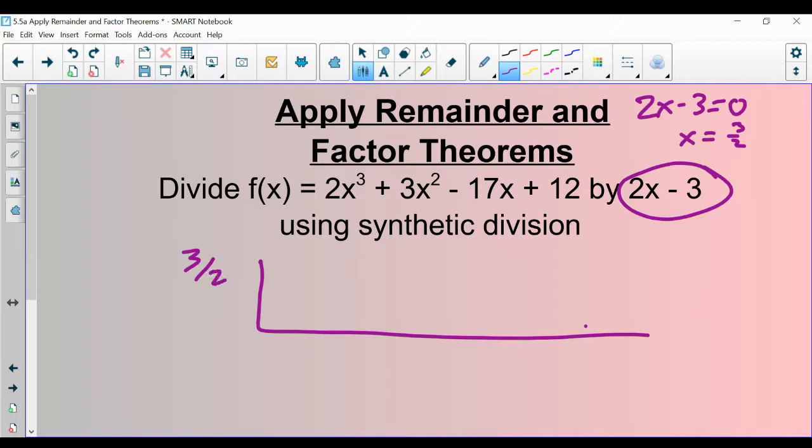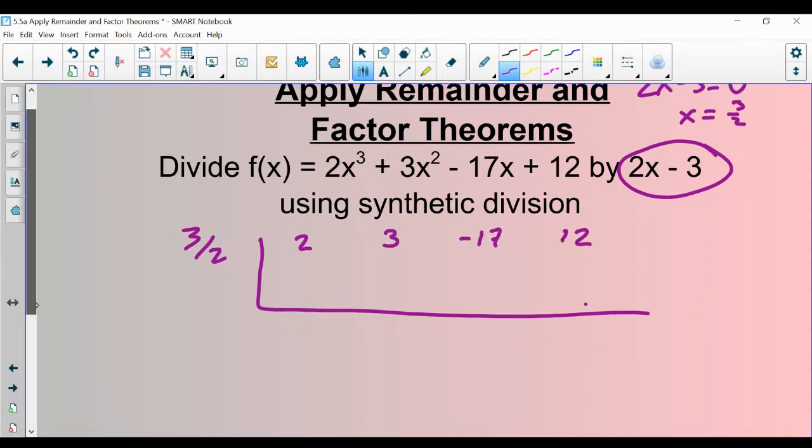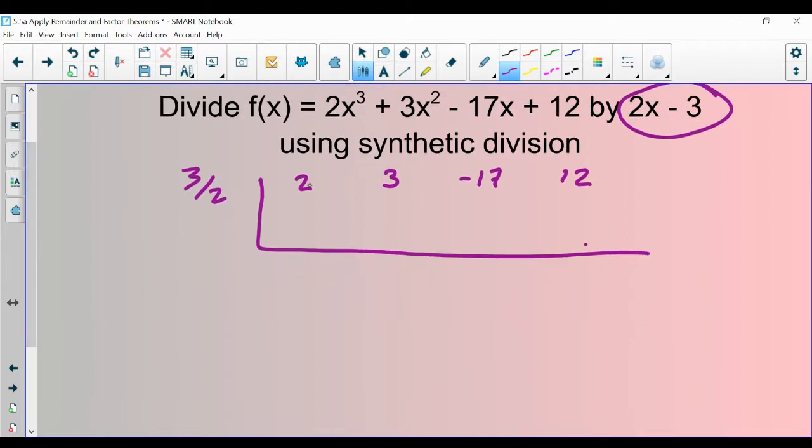That's what's going to be what goes on the outside. And then all the coefficients here, 2, 3, negative 17, and 12, are going to be the first row in our synthetic division symbol.